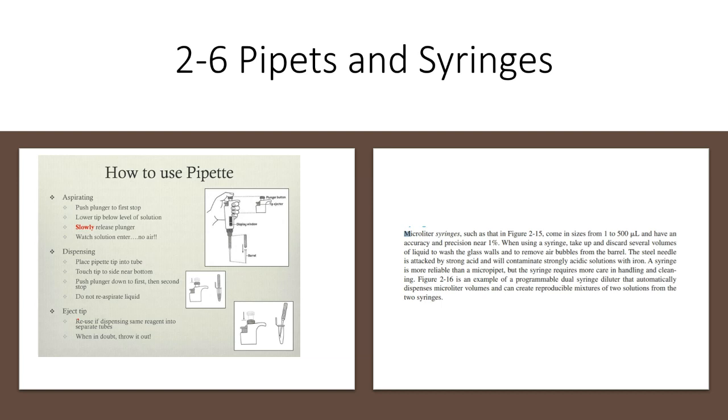When dispensing, place pipet tip into the tube. Touch tip to side near button. Push plunger down to first then second stop. Do not re-aspirate the liquid - it's going to give you inaccurate volume and inaccurate results. Eject the tip means to reuse if dispensing same reagent into separate tubes, and when it's out, you need to draw it out.